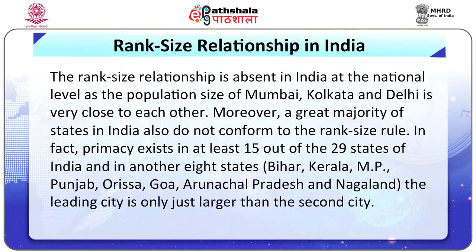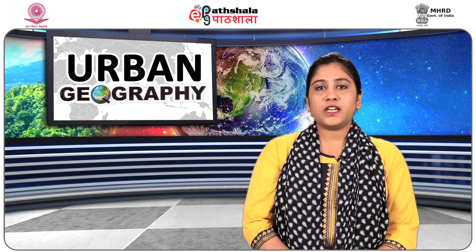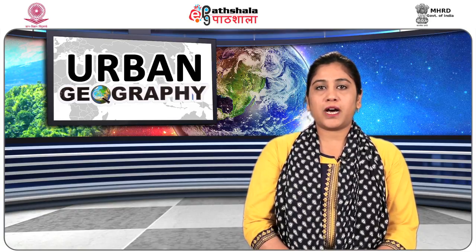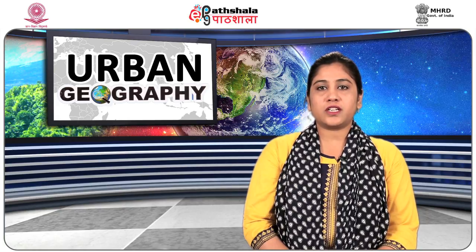Rank size rule relationship in India: the rank size relationship is absent in India at the national level, as the population sizes of Mumbai, Kolkata and Delhi are very close to each other. Moreover, a great majority of states in India also do not conform to the rank size rule. Primacy exists in at least 15 out of 29 states of India, and in another 8 states — Bihar, Kerala, MP, Punjab, Orissa, Goa, Arunachal Pradesh and Nagaland — the leading city is only just larger than the second city. In Kerala, the three cities of Kochi, Kozhikode and Thiruvananthapuram have nearly the same population size, as is the case with Indore, Jabalpur and Bhopal in Madhya Pradesh, and Ludhiana, Amritsar and Jalandhar in Punjab. Rank size relationship appears to hold good in Rajasthan. In brief, the rank size rule in India is an exception rather than a rule.